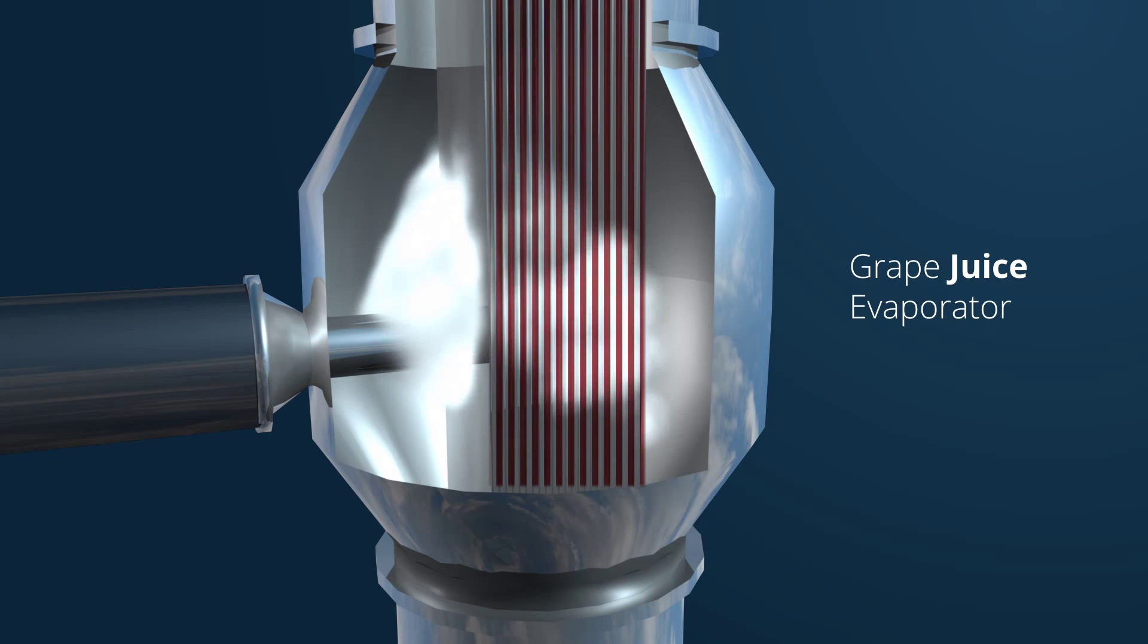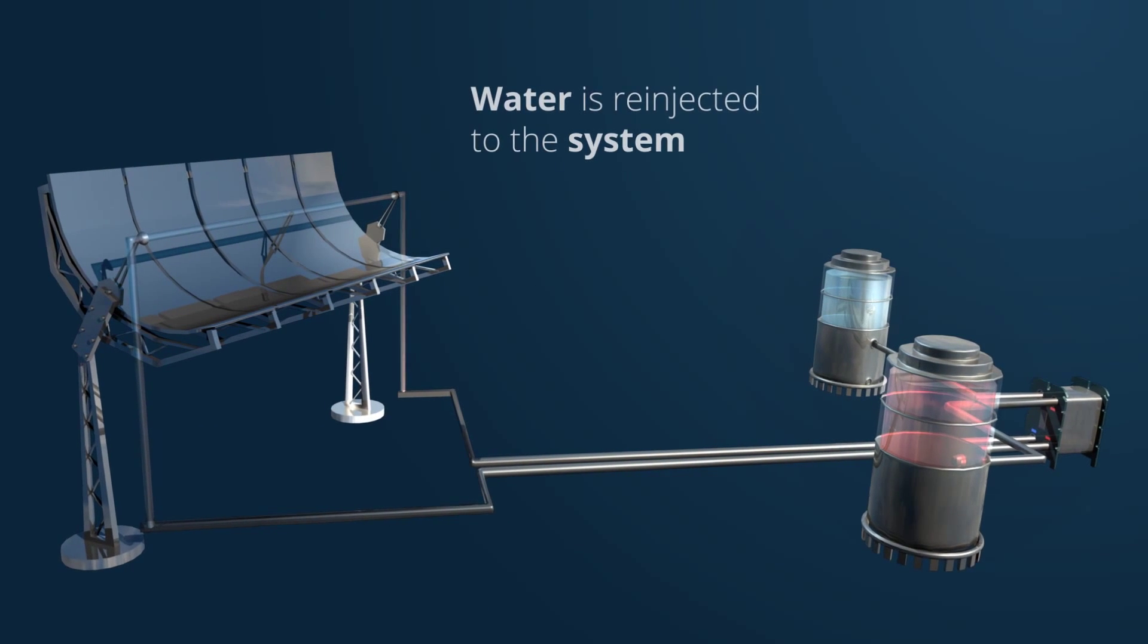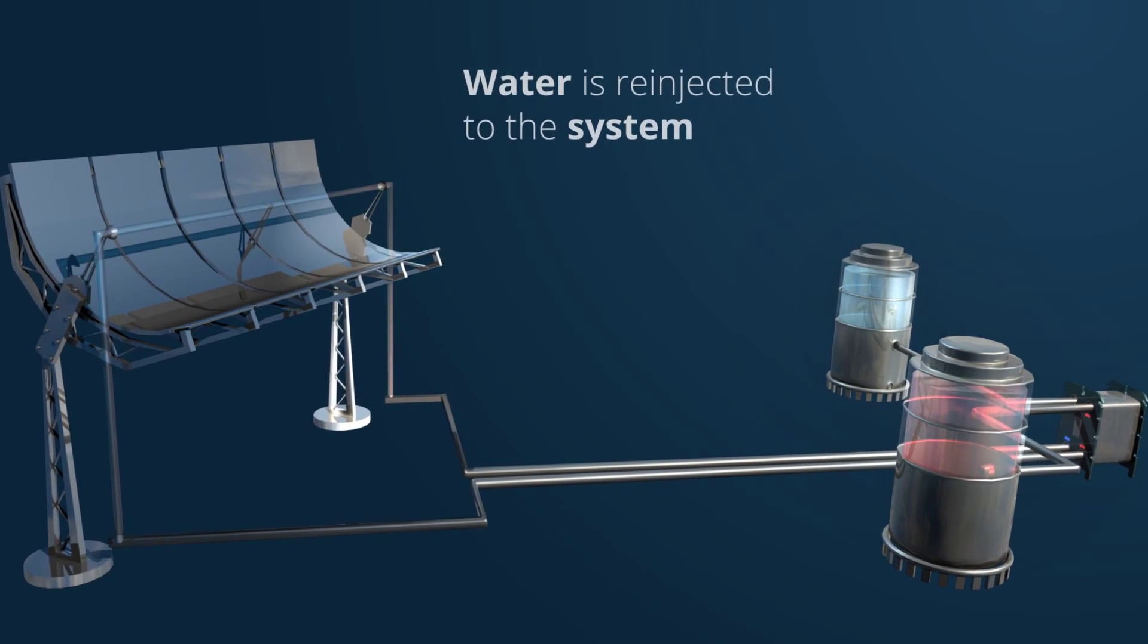The water evaporated from the grape juice is then collected, adjusted and re-injected into the system, creating a self-sustaining cycle.